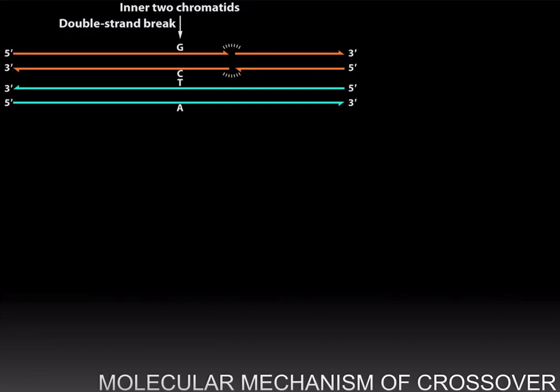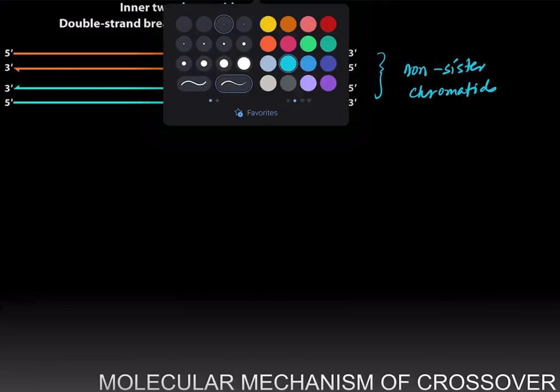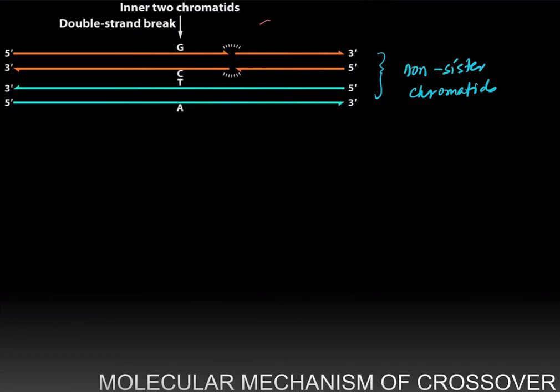you can have a double strand break in one of the non-sister chromatids. And here we have two non-sister chromatids, where the orange one has had a double strand break.